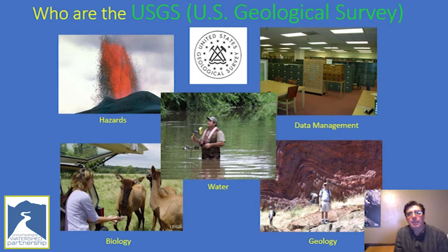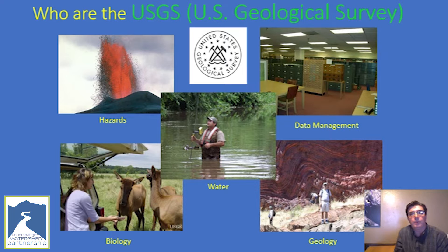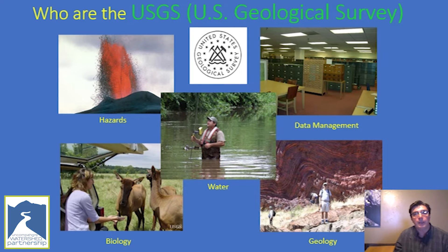Hello everyone, my name is Ken Leib and I am a hydrologist for the U.S. Geological Survey. My current role at the USGS is acting director for the Colorado Water Science Center. I am stationed in Grand Junction. The Water Science Center in Colorado has three field offices: one in Pueblo, one in Grand Junction, and one in Durango, and our main office location is in Lakewood, Colorado on the Denver Federal Center.